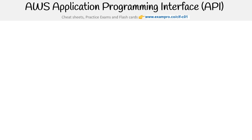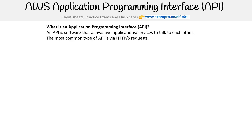Hey, this is Andrew Brown from ExamPro, and we are looking at AWS application programming interface, also known as AWS API. Before we talk about the API, let's describe what application programming interfaces are. An API is software that allows two applications or services to talk to each other, and the most common type of API is via HTTP requests.